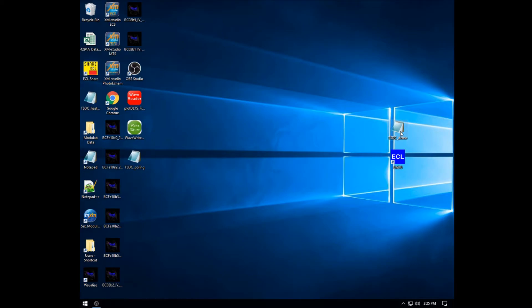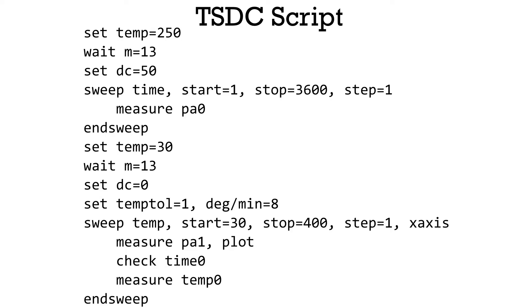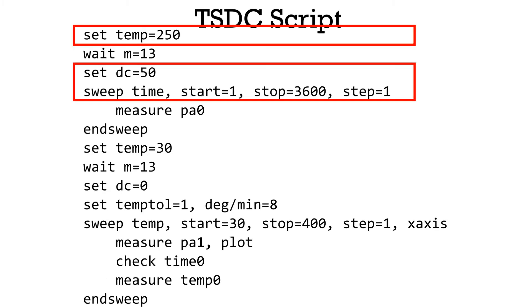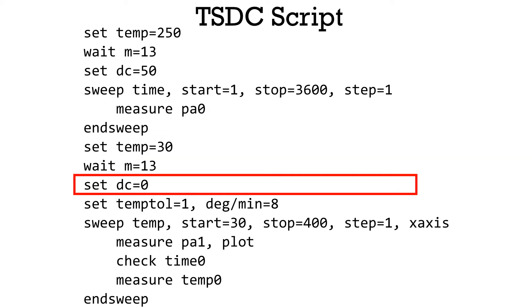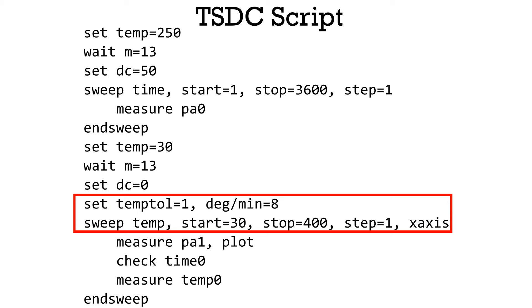Here you see script files which define the experimental conditions. In this particular experiment, we use iron-doped strontium titanate bulk sample. First, the sample is polarized at 250 degrees Celsius under a voltage of 50 volts for one hour. Then, the sample is cooled down to room temperature. Subsequently, the electrical field is removed and the sample is heated at a constant rate while simultaneously the polarization current is recorded. The total experiment time is approximately 2 hours.